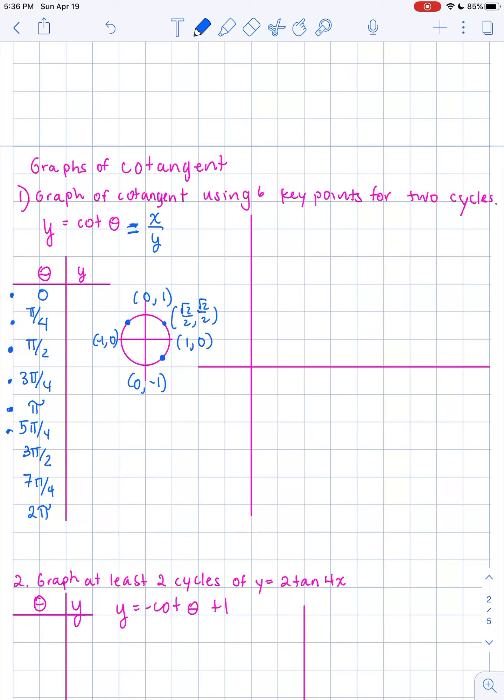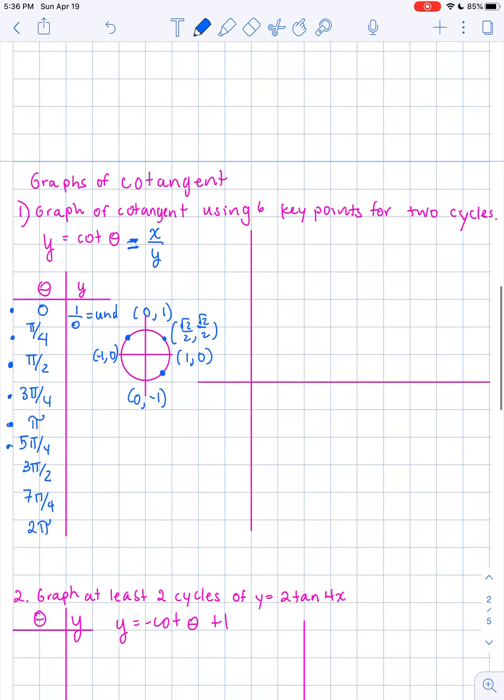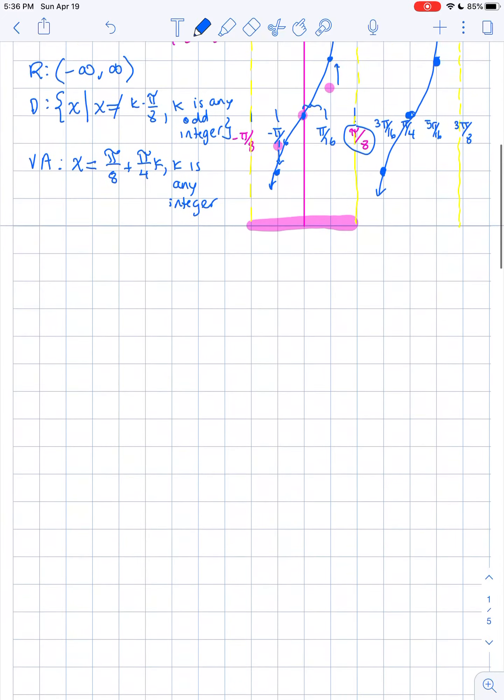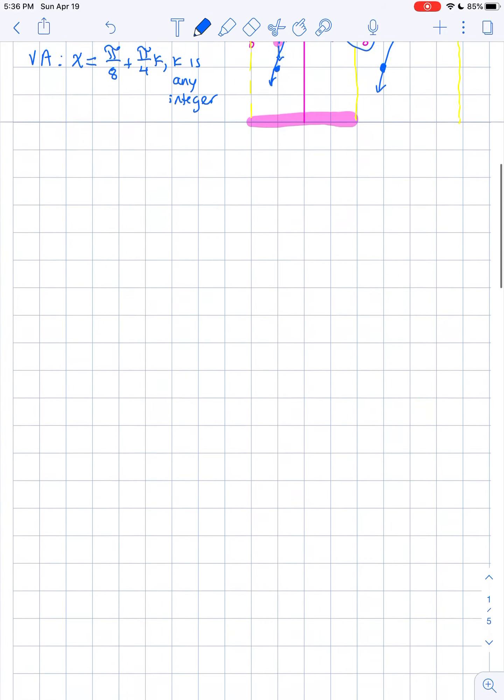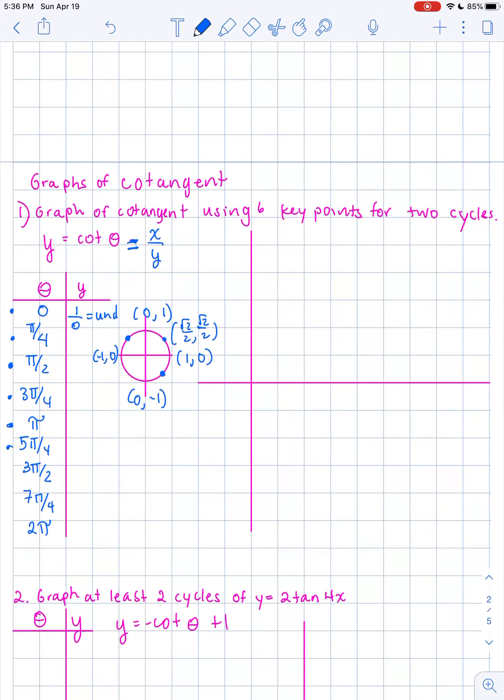When I take a look at 0 degrees or 0 radians, I have the coordinate point (1, 0). If I put the x over the y, I get undefined. What we see now is that what had produced at 0 for tangent, we got 0. Now the 0 is in the denominator, which then makes your function undefined, and therefore a vertical asymptote will occur there. At π over 4, you still get a ratio of equal values. So we get 1 at π over 4.